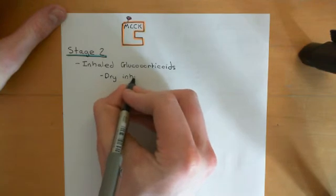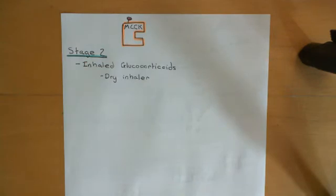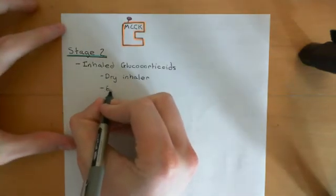We saw how salbutamol and terbutaline were given by aerosol inhalation. Now what's a dry inhaler? Well basically, a dry inhaler means that you inhale a powder. So the glucocorticoid is effectively a dust, a powder, and you take a great big breath of this dust which contains the drug molecule and that will then go into your airways. And then you have to hold your breath for a while to let the drug gain access to your airway epithelium and then you can breathe out again. So that's how inhaled glucocorticoids are given. And as I say, they'll be given routinely, and generally it's twice daily.